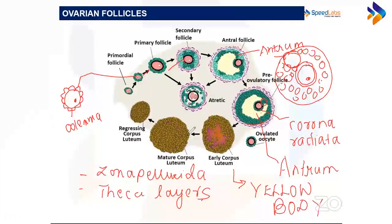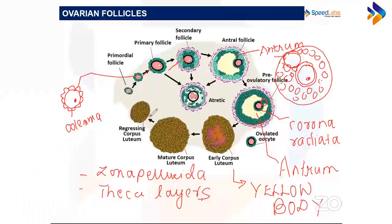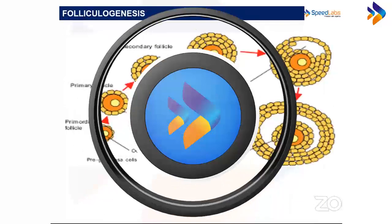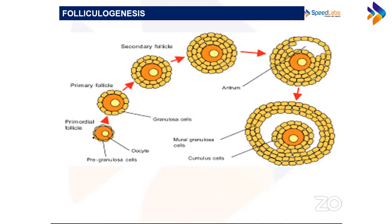The corpus luteum waits for a signal indicating whether pregnancy has occurred. If pregnancy happens, it is maintained for around three months, continuing to release hormones. If pregnancy does not occur, it degenerates. The diagram again shows the same stages: primordial, primary, secondary, tertiary follicle, and the Graafian follicle.